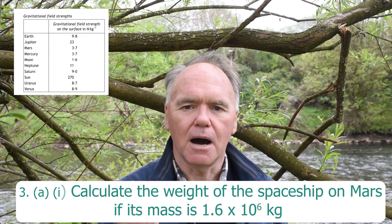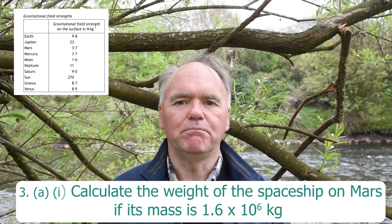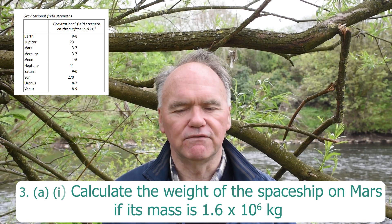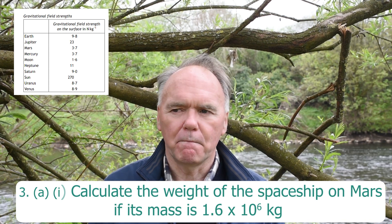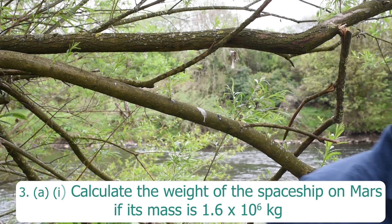Weight is the force a planet exerts on a body of mass m. On Earth, the weight of a 1 kilogram body is 9.8 newtons. On Mars it would be 3.7 newtons according to the data table. So weight is a force acting downwards, while mass is a measure of how hard it is to push something sideways — and it's the same on all planets. Therefore the weight of our space rocket on Mars is 4.8 × 10⁶ newtons, and that is the force the rocket has to overcome in order to rise off the planet.